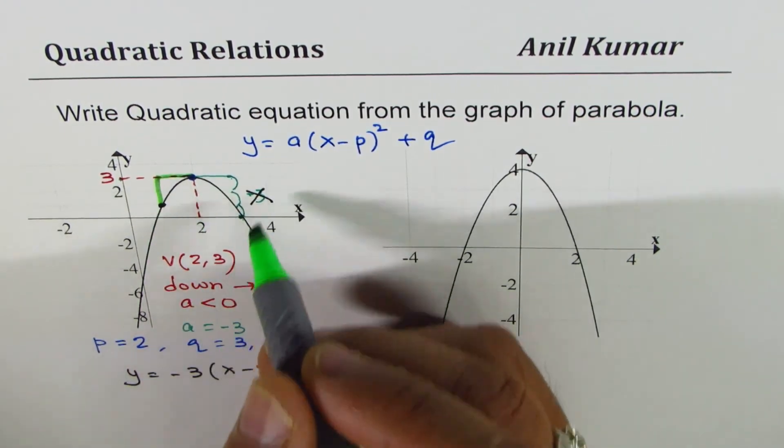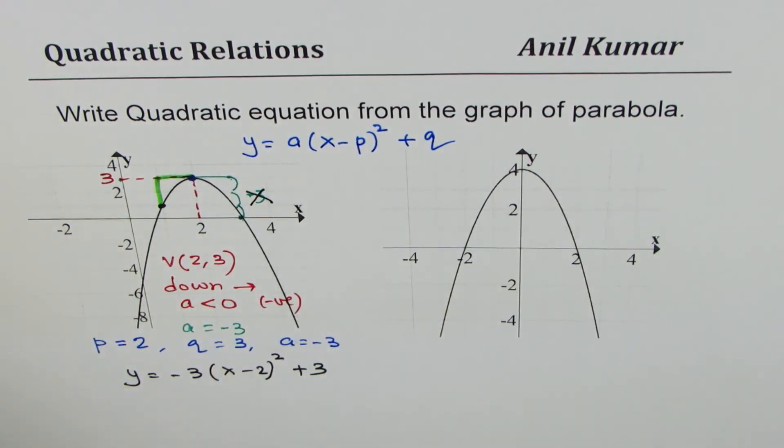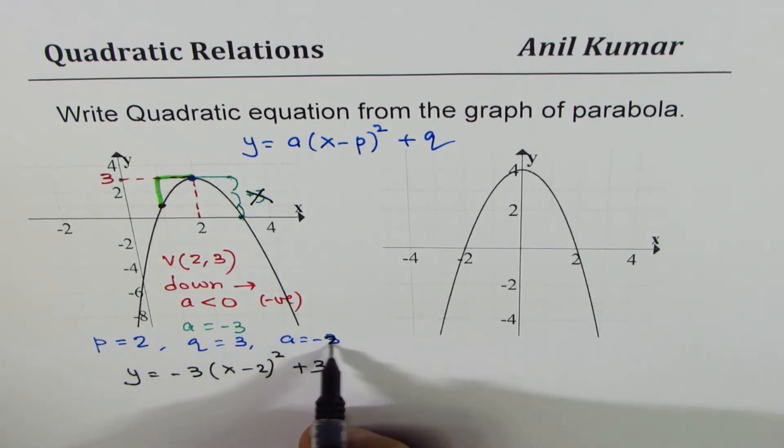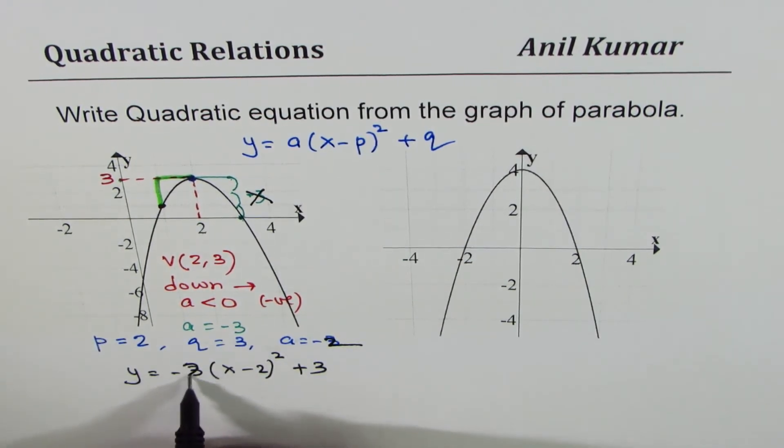So here we have gone, this is the step, right? So it is only 2 steps. Let me correct the value of A as minus 2. So I am correcting this to minus 2.